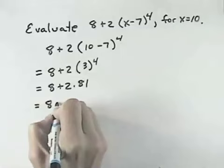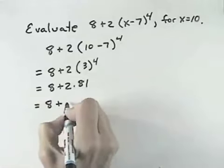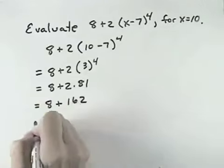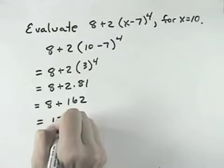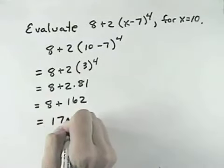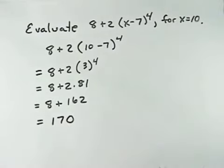Now we do multiplication and division from left to right as they occur, which would be 2 times 81 or 162. Finally, add or subtract from left to right, in this case add the remaining constants to be 170 when x equals 10.